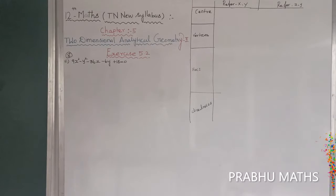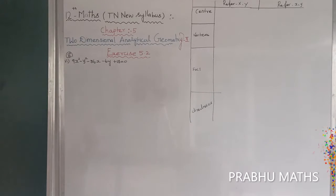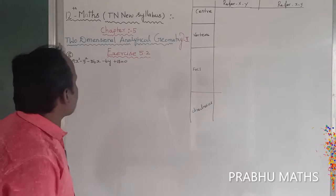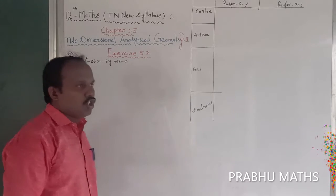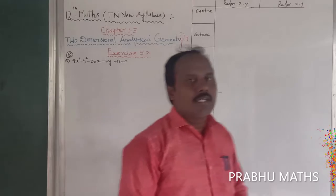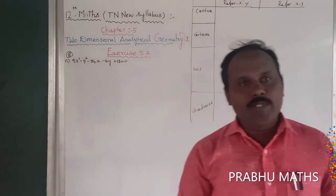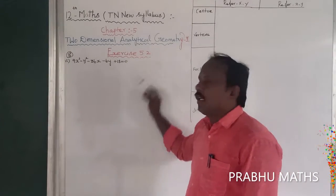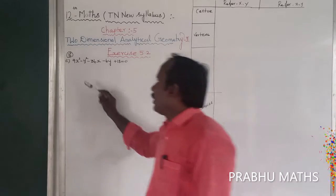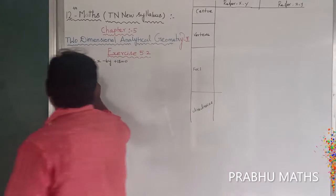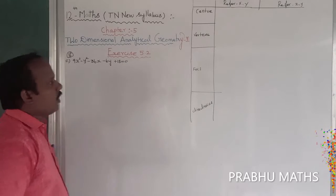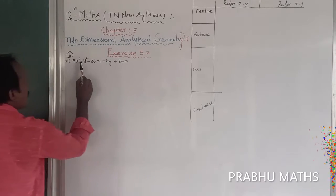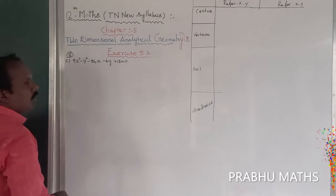x is 5.2, 8th sum, 6th subdivision. The equation is 9x² minus y² minus 36x minus 6y plus 18 equals 0. This is a hyperbola, because the sign between x² and y² is minus, so that is called a hyperbola.